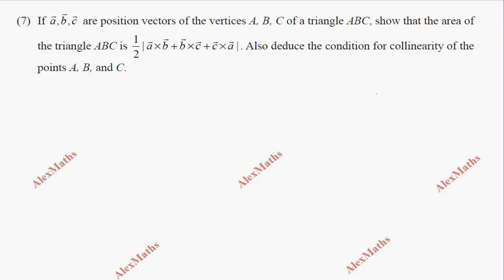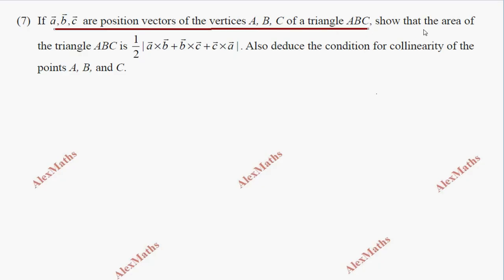Hi students, this is Alex here. In the question we have a vector, b vector, c vector are the position vectors of the vertices A, B, C of a triangle ABC. Show that the area of the triangle ABC equals half of a cross b plus b cross c plus c cross a. This is the first part.